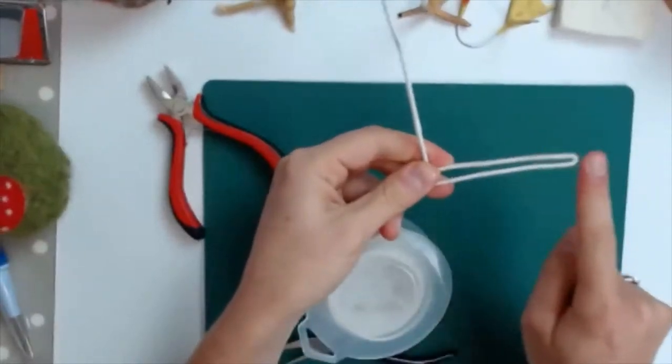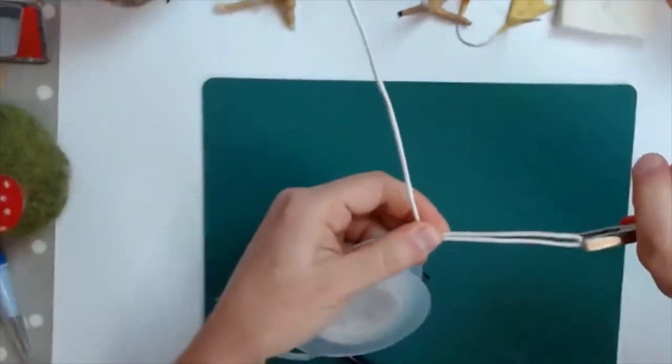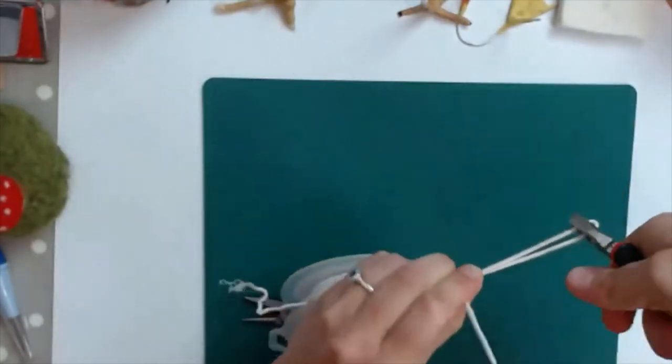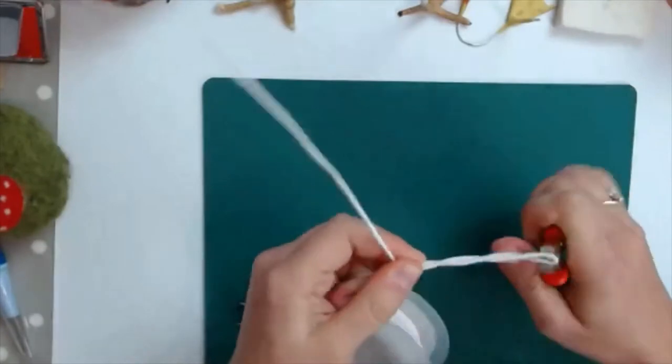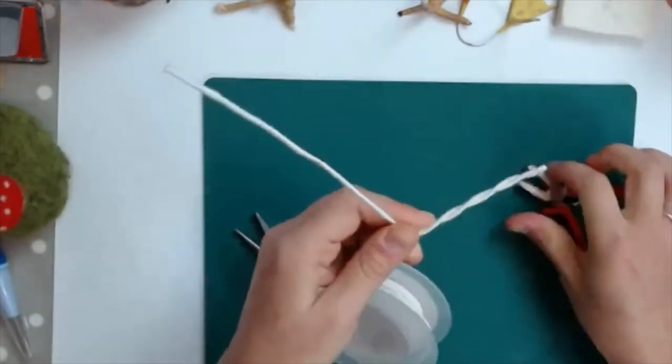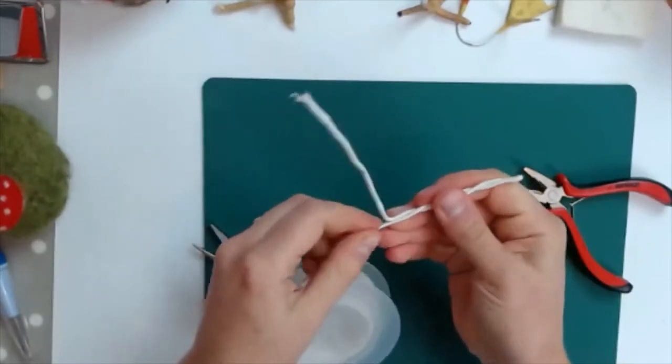So this is now our middle toe here, and then you can use your pliers just to twist those ends together. Twisting the wire together makes it a lot stronger and stiffer, so that will help to give your bird some stability when it's standing up.